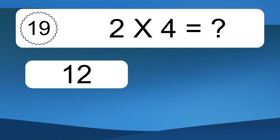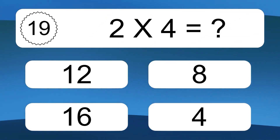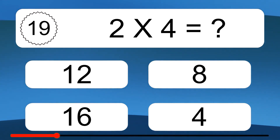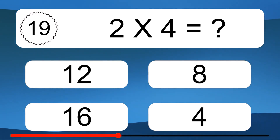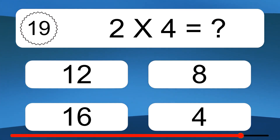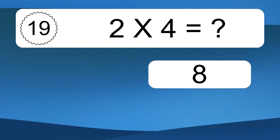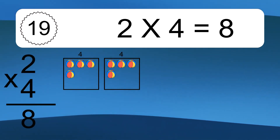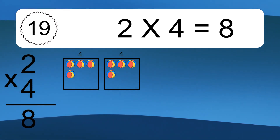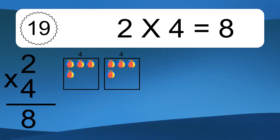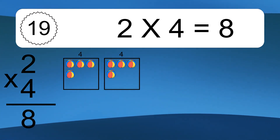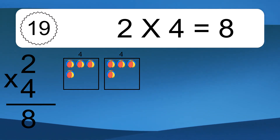2 times 4 equals what? 2 times 4 equals 8. We have 2 boxes and each box has 4 colorful balls inside. If you count all the balls in all the boxes together, you will have 2 times 4 balls. This equals 8 balls.